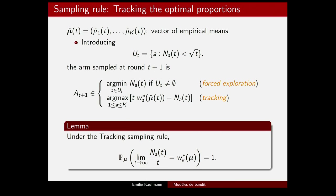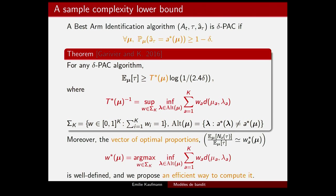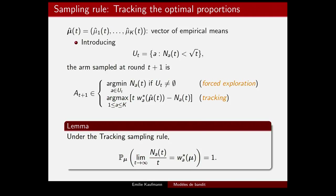Because we identified the optimal proportions, we can artificially design an algorithm that forces the proportion of draws to converge to this target quantity. That is what we do with this tracking approach.